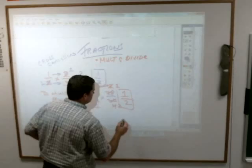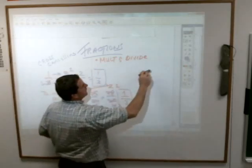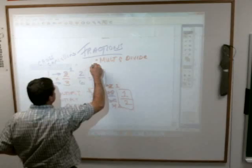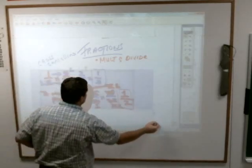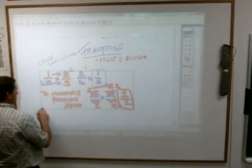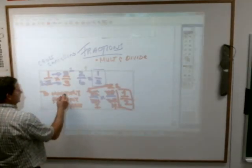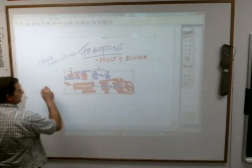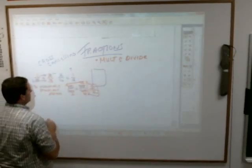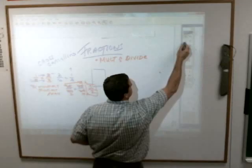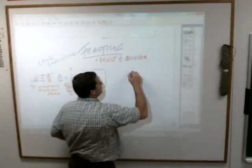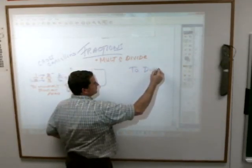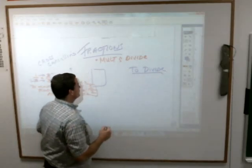Now if you'd multiplied that out — what is 48 times 15? It's something big. Cross-canceling is much easier. What about dividing? Dividing is almost as easy as multiplying, except for one short and simple rule.